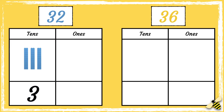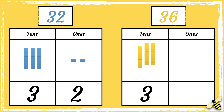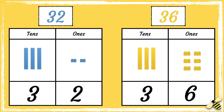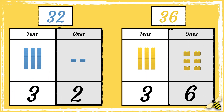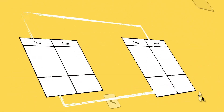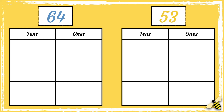Here are two more numbers. Which number is greater? The number 32 has three tens and two ones. The number 36 has three tens and six ones. Remember, when we compare numbers we look at the tens digits first. Both numbers have three tens, so now we need to compare the ones. Two ones is less than six ones, so 32 is less than 36.